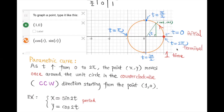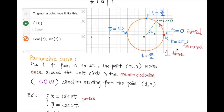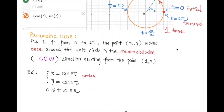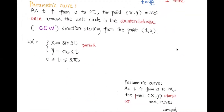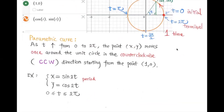Unlike a regular curve, a parametric curve requires you to indicate the direction of travel and where it starts and ends.